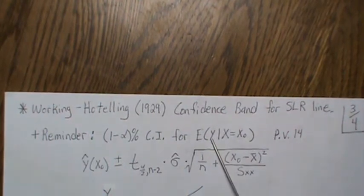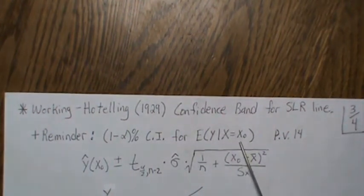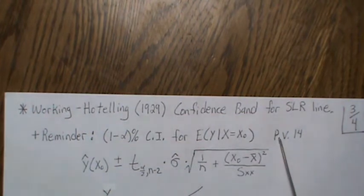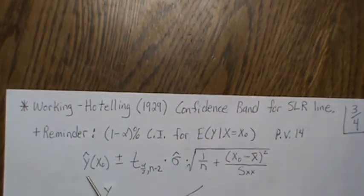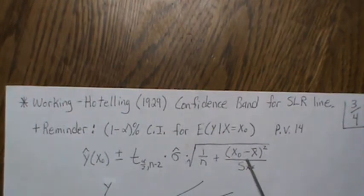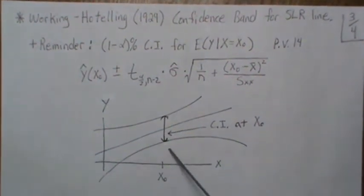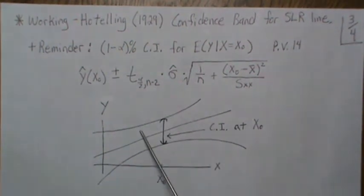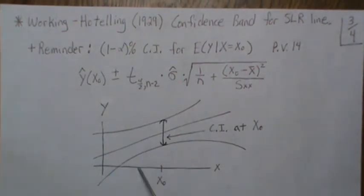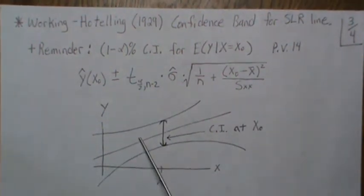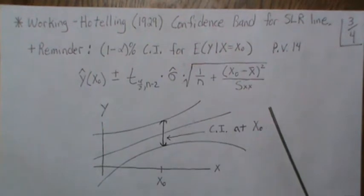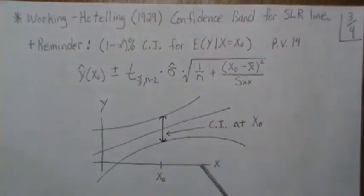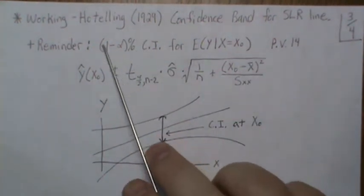This is a reminder: if we want a confidence interval for the average y at a particular x—we did this in previous video 14—it was this right here. As a graphical illustration, at this x we found this confidence interval. Some people create these bands that represent if you were to conduct a test at this point, then the interval would be this.